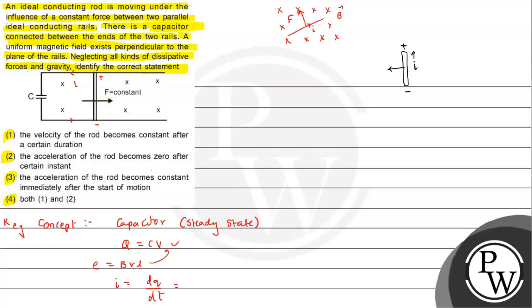When this current flows, this conductor will experience a force, that is force due to magnetic field, which we call F equals to BIL. The conductor has a force applied on it, so in that situation the acceleration can be written as F minus BIL upon m, if m is the mass of this rod.